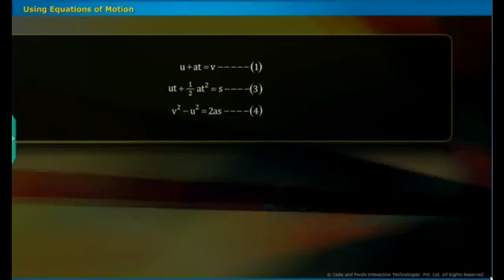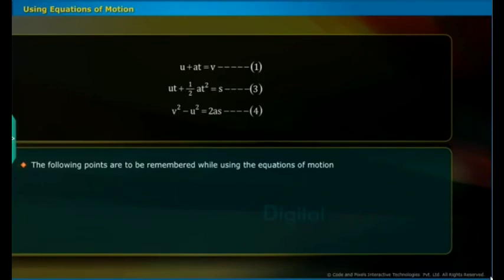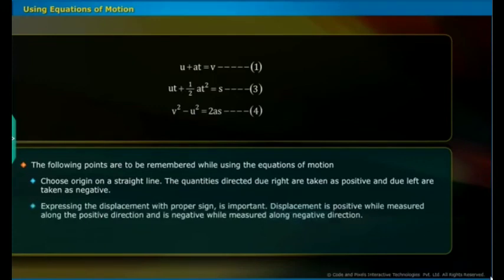Important points to remember while using the equations of motion: Choose an origin on a straight line. Quantities directed to the right are taken as positive and to the left as negative. Expressing displacement with proper sign is important — displacement is positive when measured along the positive direction and negative when measured along the negative direction.